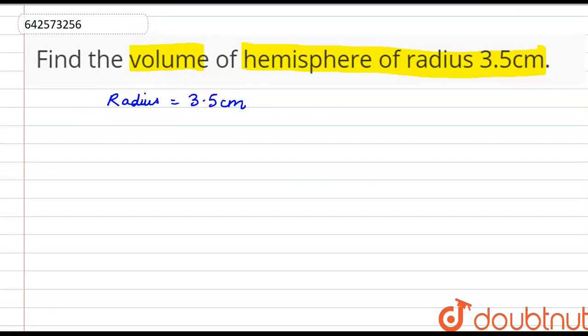And we know that the volume of a hemisphere of radius r is 2/3 π r³. So if we put the value of r here as 3.5 cm,